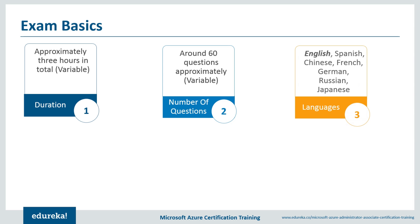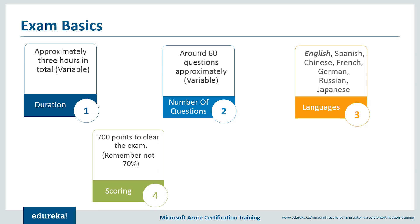For scoring, the clearing threshold is 700 points — not 70%. The reason it's expressed as points is that different questions carry different point values; some questions are worth more and some are worth less. It totally depends on how Azure judges your certification examination. So do not be under the notion that it is 70% — you have to score 700 points, which is not entirely within your control. Try to answer as many questions as possible.